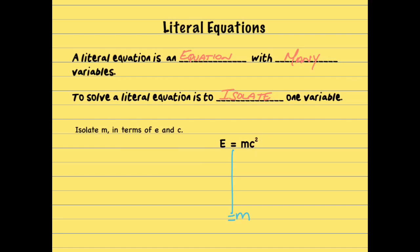Now the question becomes, I have m C square. What is the C square doing to the m? So they're next to each other with nothing in between. That means multiplication. So how do I cancel something that is multiplying by doing the opposite, which would be dividing? So I'm going to divide by C square.